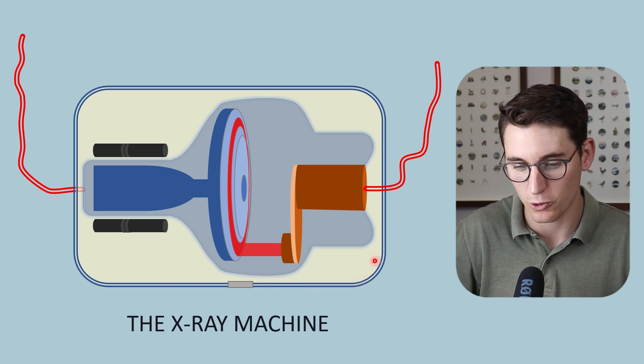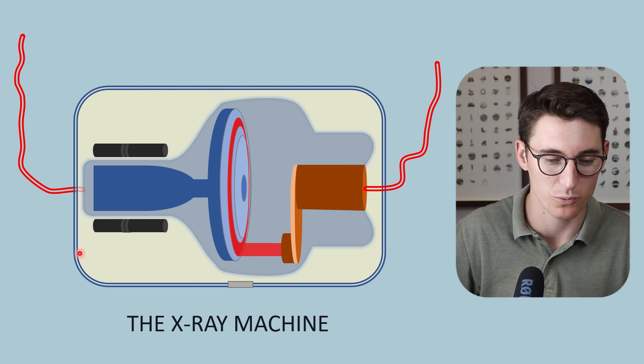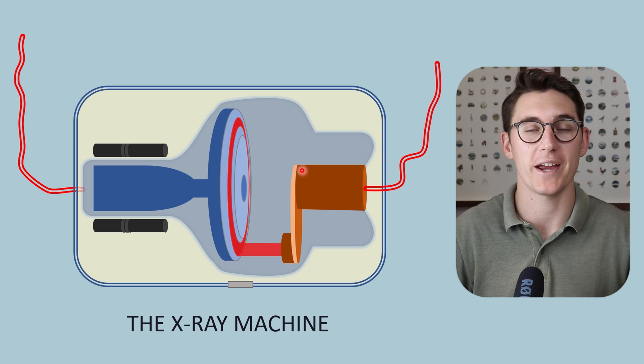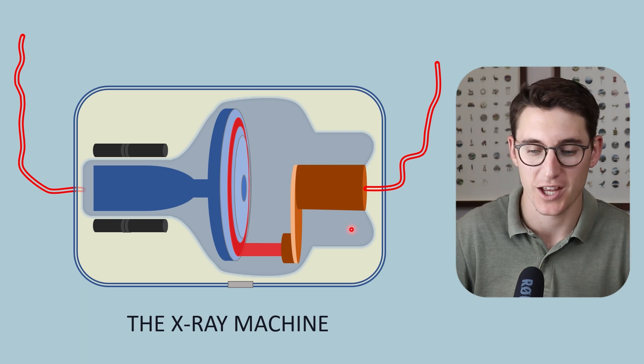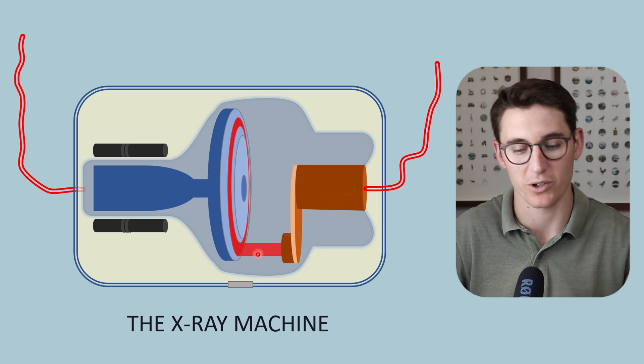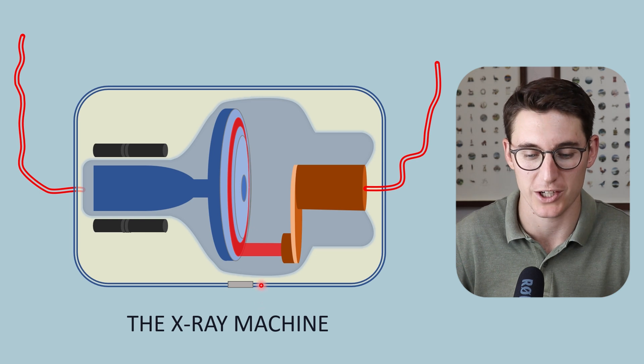The rest of the tube housing is made up of a highly attenuating material which is normally lead. That prevents any x-rays from spreading out away from our patient, exposing staff or other patients that aren't getting the x-ray. We don't want those x-rays to reach anyone else. We only want this very specific beam of x-rays to head out towards our patient.